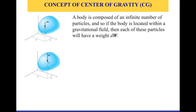A body is composed of an infinite number of particles, and you can see that in the figure on the top — we have this square that has a weight that we identify. Because it's infinitesimal, we are going to define it as dw. Each particle has a weight of dw because of the gravitational force. And the dw has a location identified as x̃, which is x with a tilde on top of it, ỹ, and z̃. Those are the locations of our infinitesimal weight.